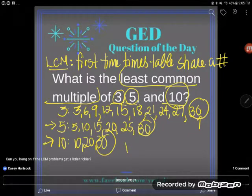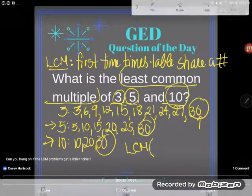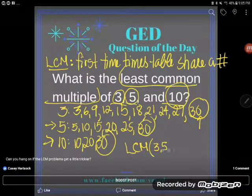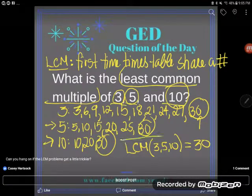I'm gonna write my answer in a complete math sentence because I love to get you guys used to the way we denote things in math. So the LCM of 3, 5, and 10 is 30.